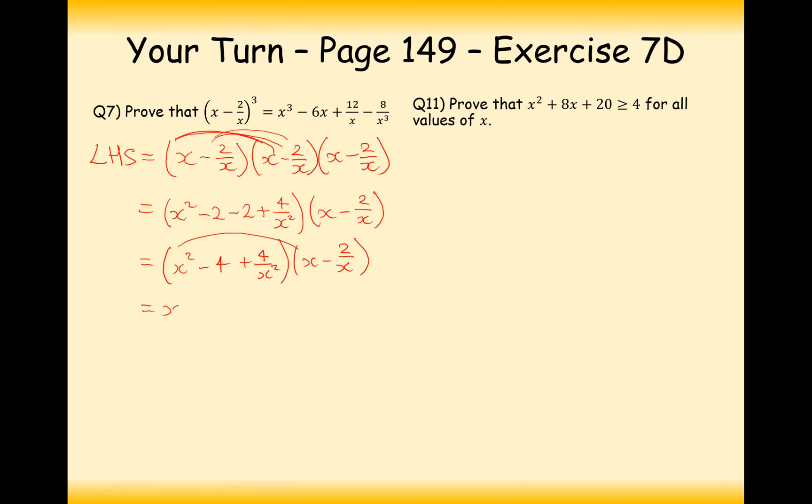And I'll simplify this before I do any further working. This will give me x squared minus 4 plus 4 over x squared times x minus 2 over x. Let's expand further. So we're going to get x cubed. Now x squared times minus 2 over x is going to give me minus 2x because one of the x's will cancel. So we'll still have 1 x that we're timesing here times by the negative 2 so we'll get minus 2x. Then we get minus 4x and then we get positive 8 over x from the double negative. Then we get plus 4 over x and the reason we get 4 over x is because one of the x's will cancel from the top and bottom. And then we're going to get minus 8 over x cubed.